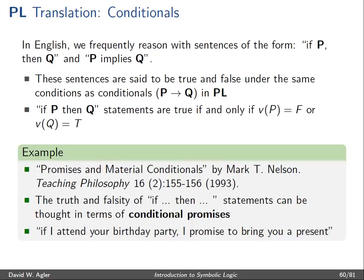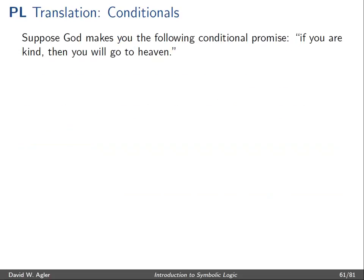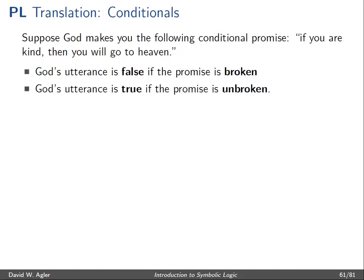We can look at these types of sentences — where if a condition holds, an individual attests that some scenario or event will come about — and think about under which situations the promise is fulfilled, broken, or unbroken, using this as a parallel to the truth and falsity of a conditional. Suppose the Almighty makes the following promise to you: if you are kind, then you will go to heaven. We can think about under what states God has kept his promise.